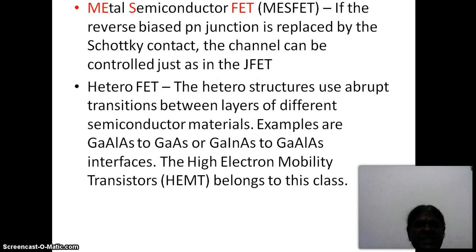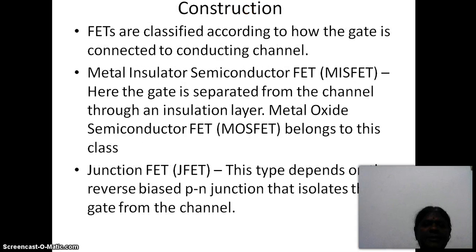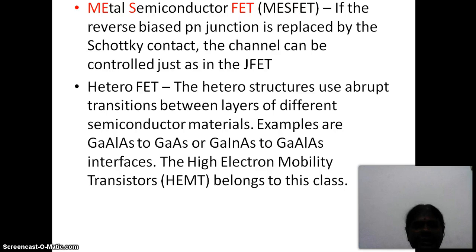Next, in the case of MESFET — metal semiconductor FET — the gate is isolated from the channel with the help of a Schottky contact. A metal semiconductor contact is called the Schottky contact. In the MESFET, the Schottky contact is used to isolate the gate and the conducting channel. So based on the gate-channel isolation, we have three types: MISFET where the insulation layer is used, JFET where the reverse bias PN junction is used, and MESFET where the Schottky contact is used.